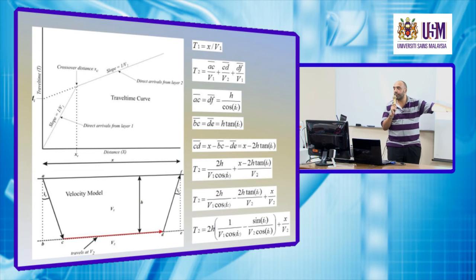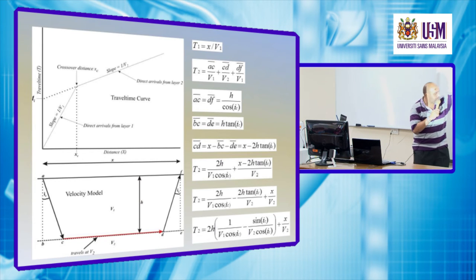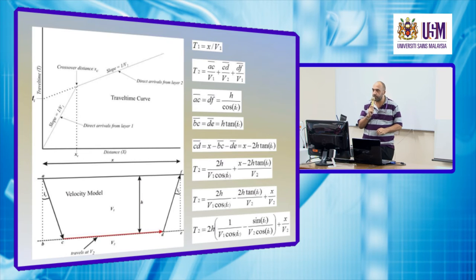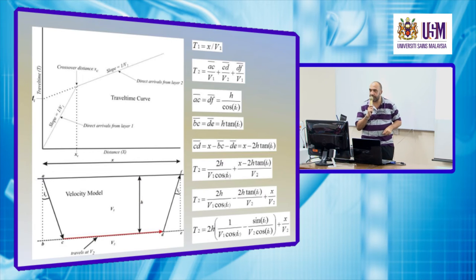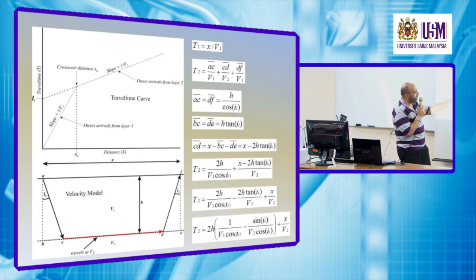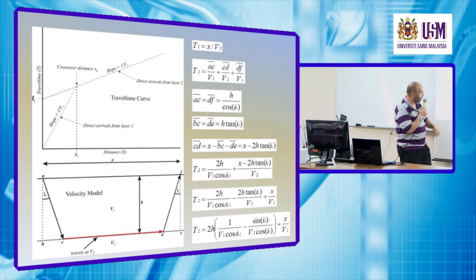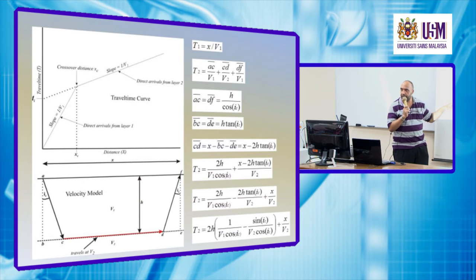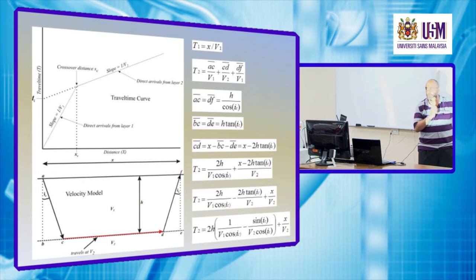Due to the horizontal interface, both AC and DF are equal — you can use congruent triangles to verify this. The thickness is the same on both sides, the angle is the same here and here, and both have 90-degree angles, so these two triangles are congruent, and therefore AC equals DF.